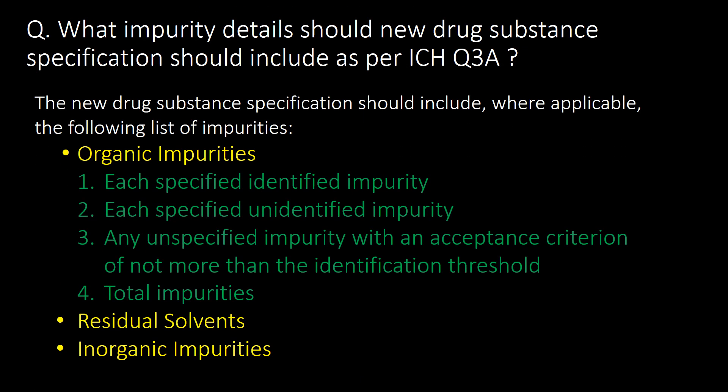Last and very important question: what impurity details should a new drug substance specification include as per ICH Q3A? The new drug substance specification should include, where applicable, the following list of impurities. First, organic impurities, which include each specified identified impurity, each specified unidentified impurity, and any unspecified impurity with an acceptance criteria of not more than the identification threshold total impurities. Second, residual solvents, and third, inorganic impurities.